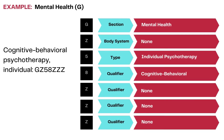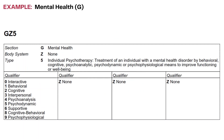Here is an example of coding individual cognitive behavioral psychotherapy. The section value is G for mental health, the body system is none, the type of procedure is individual psychotherapy, the fourth character value is cognitive behavioral, and the fifth, sixth, and seventh characters are all none. This is the corresponding table which shows the procedure for individual cognitive behavioral psychotherapy.